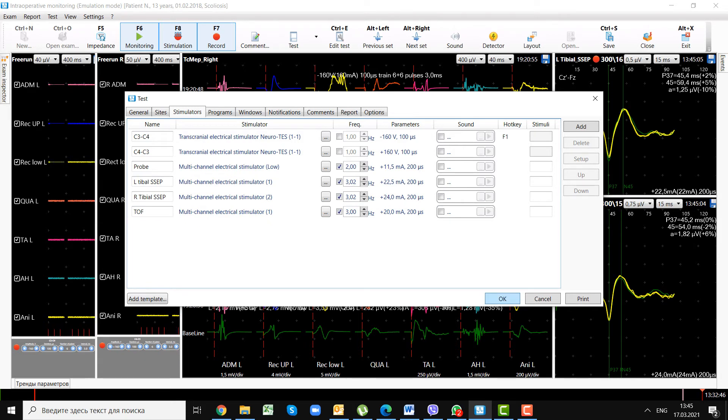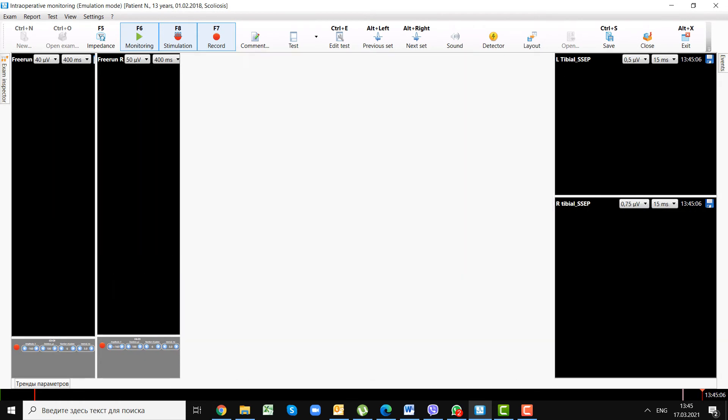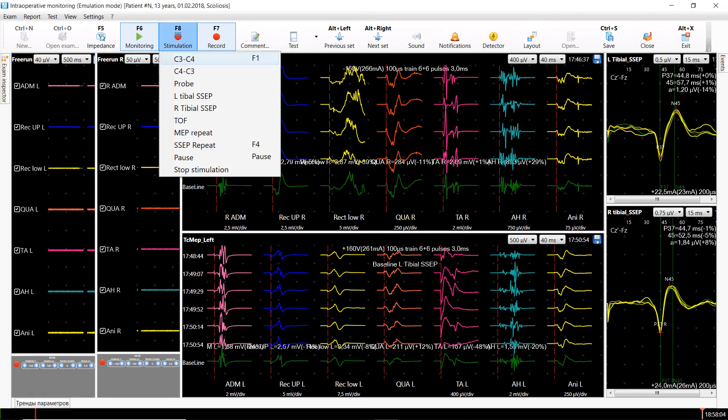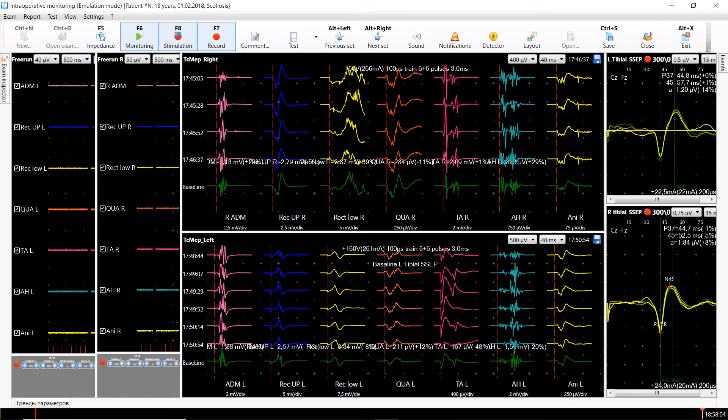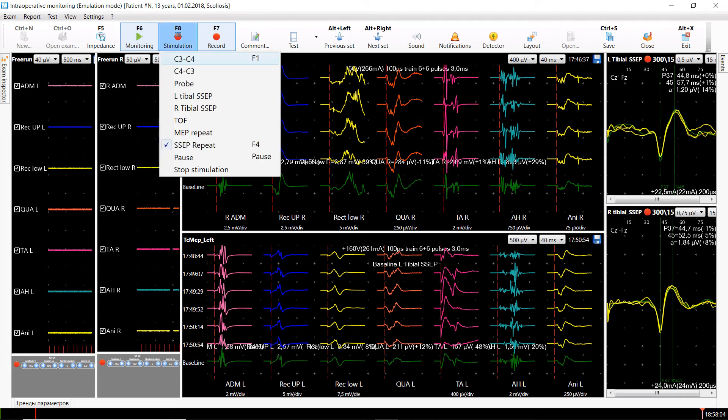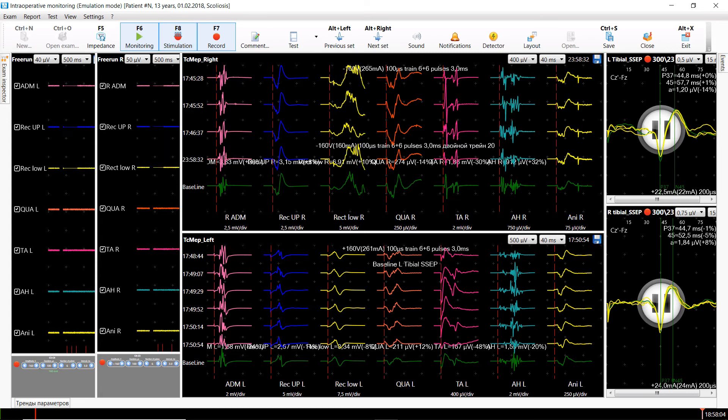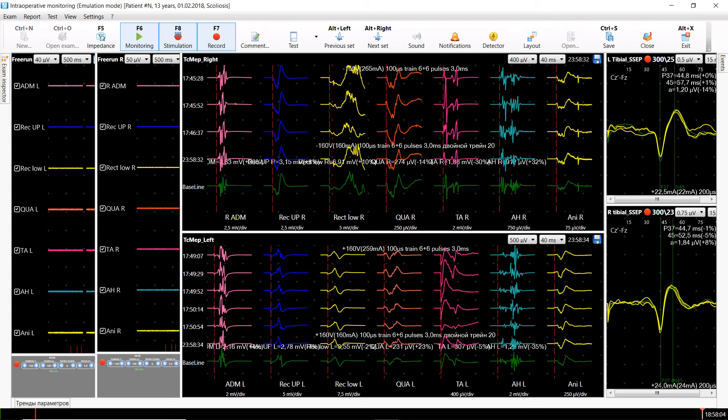The user can always change the settings of any template. Neuru IOM system features many tools for continuous monitoring, including the automatic start of different stimulators at set intervals. This significantly facilitates the work of neurophysiologists and increases the effectiveness of monitoring.